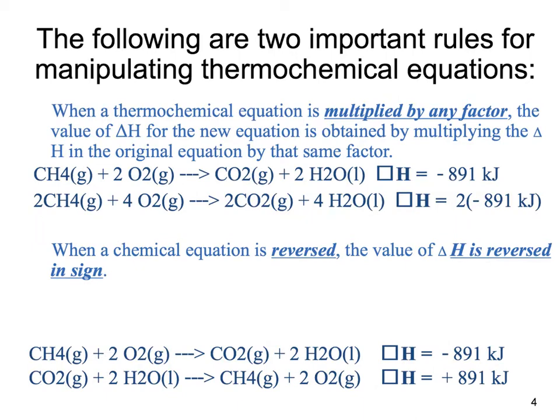The delta H term becomes part of the equation. So if you're multiplying any equation by two — doubling the reaction — then you're also going to double the delta H. If you're dividing the reaction in half, then you would also divide the delta H. Any factor you multiply the reaction by, you have to do the same thing to the delta H because it is now part of the balanced equation.